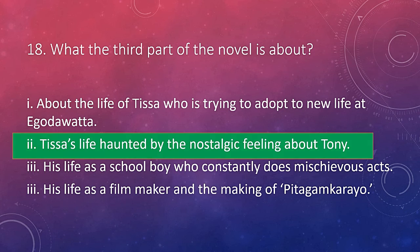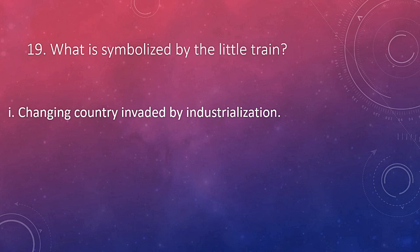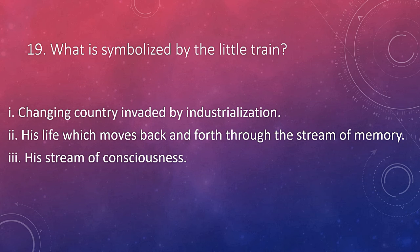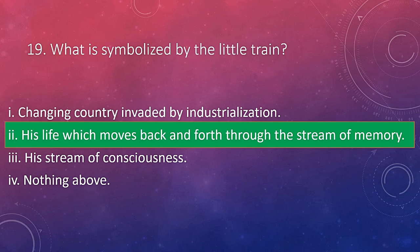Question number 19: what is symbolized by the little train? The title of the third part symbolizes his mental state, which moves back and forth like the movement of a tray. He constantly goes back to the past reminiscing about his life and his journey with Tony. The answer is his life which moves back and forth through the stream of memory.